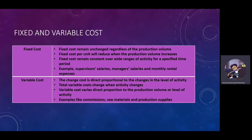For Fixed and Variable Costs: Fixed costs remain unchanged regardless of the production volume. Fixed costs per unit will reduce when the production volume increases, and fixed costs remain constant over a range of activity for a specific time period. For example, supervisor salaries, manager salaries, and monthly rental expenses.